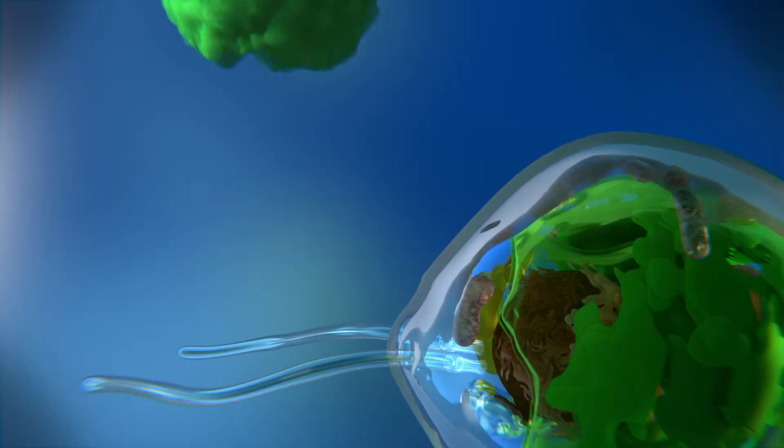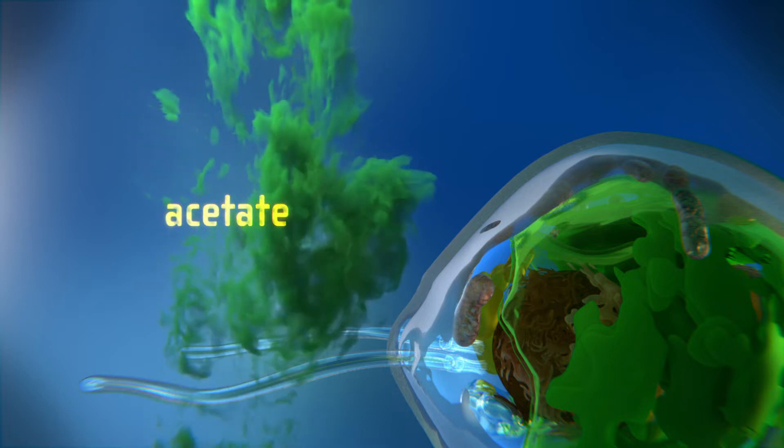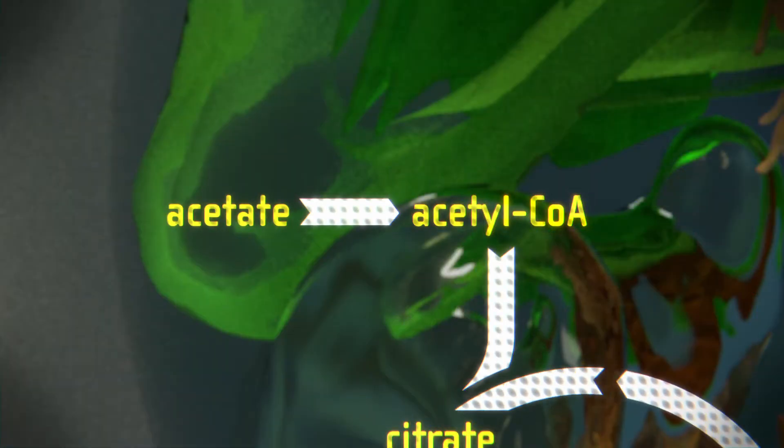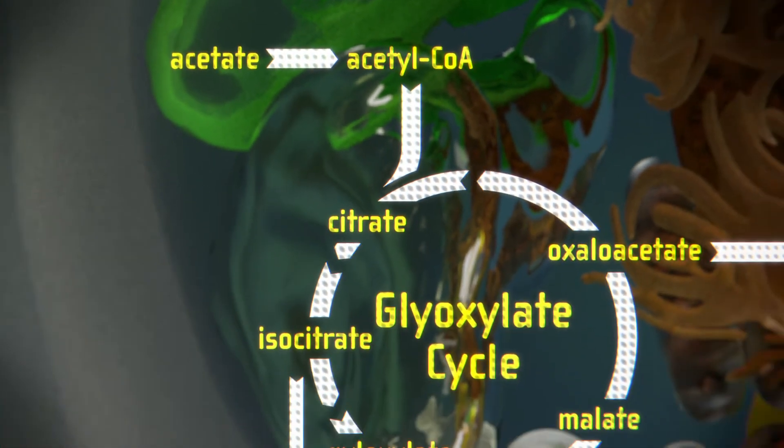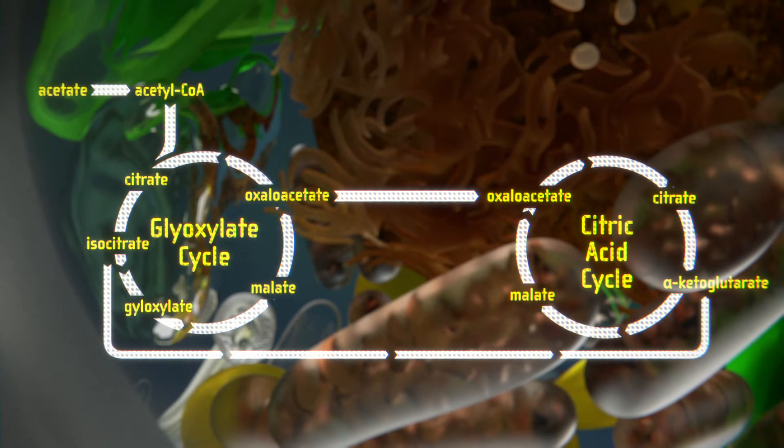Under laboratory conditions, the cell can also be enriched with acetate as an alternative carbon source to promote heterotrophic growth. First, the substance is converted to acetyl coenzyme A, then it goes through the glyoxylate cycle and the citric acid cycle.